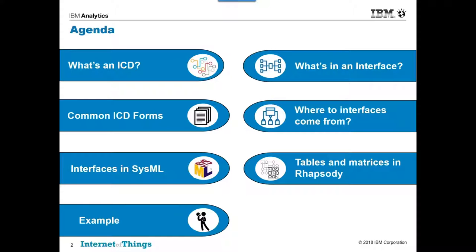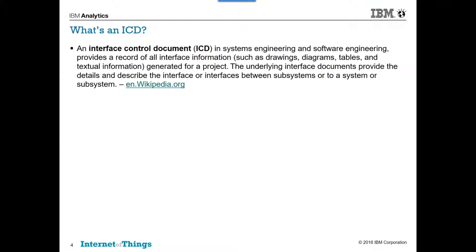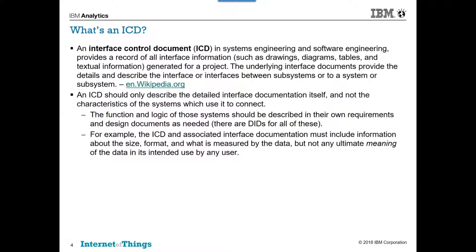So this is our agenda for today. We'll start off talking about what do we mean by ICD in general. An interface control document — you go on Wikipedia — is used in systems engineering and software engineering to record interface information. This is often drawings, diagrams, tables, and mostly text, generally for a project. There are standard Word templates out there, so you can write documents or Excel spreadsheet templates. You provide the details and descriptions of the interfaces between systems or between subsystems typically.